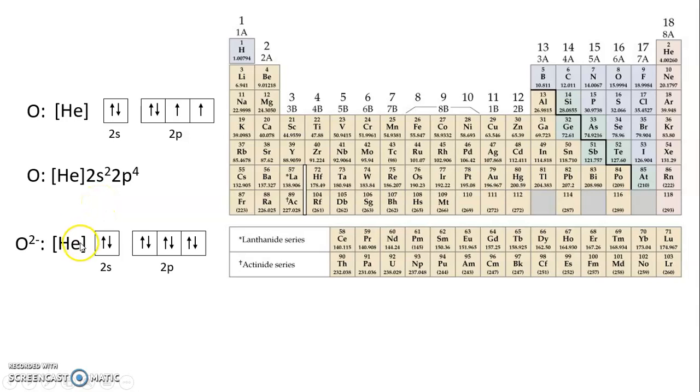And so now you see what actually happens is that we've added those two electrons to pair in these two vacancies in the valence shell, in the 2p valence shell. So now we have everything filled, and it has exactly the same electron configuration as neon.